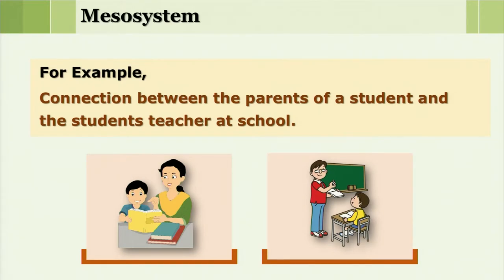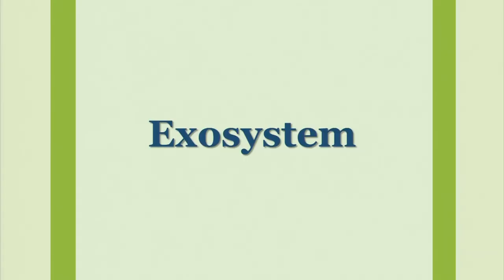The mesosystem shows the interconnections between different microsystems. For example, there is a connection between the parents of a student and the student's teachers at school. Whatever happens between parents and the child is going to affect the child's behavior at school, and whatever happens at school level is also going to affect the life of the child at home.